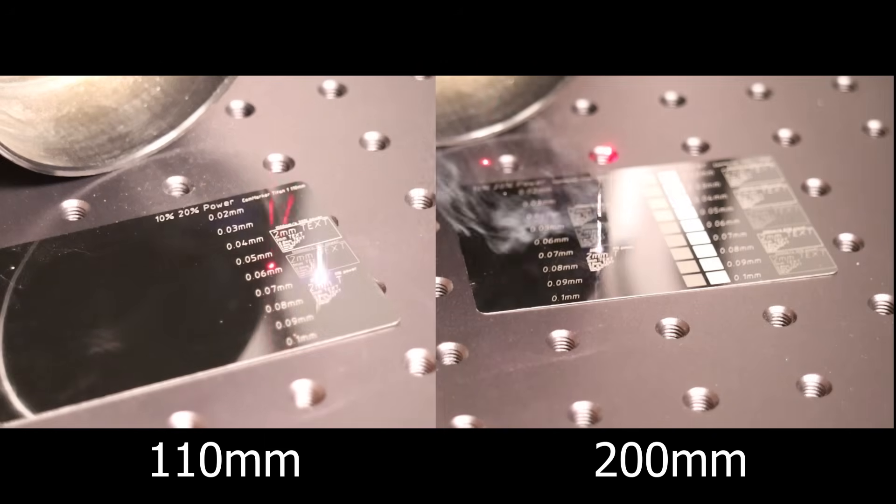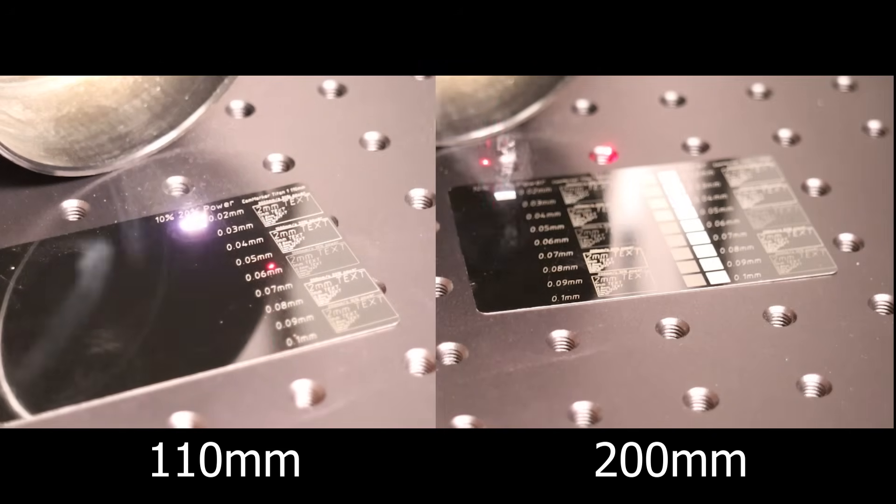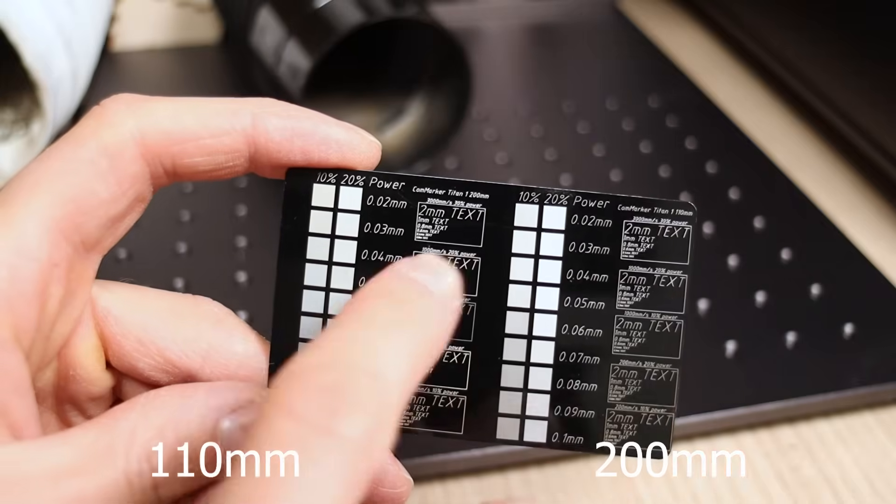To illustrate this effect, I engraved small text and an interval test pattern using both a 110mm and 200mm lens.